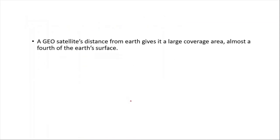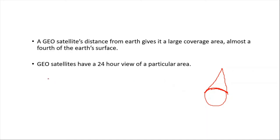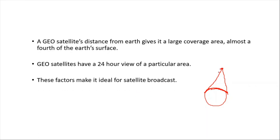The geostationary satellite's distance from earth gives it a large coverage area — almost one quarter of the earth's surface. They can broadcast and send signals to a large portion of the earth's surface. Geostationary satellites also have a 24-hour view of a particular area, meaning they can continuously send and receive signals from that region, making them very important for television broadcasting.